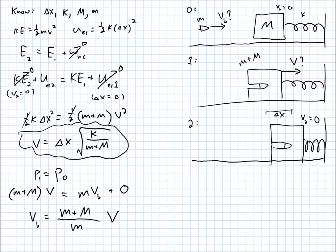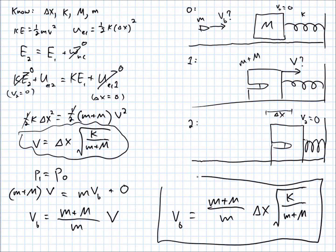Since we found v earlier, we can plug that in here, and we'll have the velocity of the bullet. So the final answer, symbolically, would be the velocity of the bullet equal to that. I'm sure this could be rewritten using some exponent rules or something, but something like that.